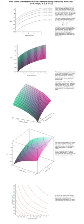When preferences are represented by a utility function, the indifference curves are the level curves of the utility function. Therefore, if one is to change the quantity of x by dx without moving off the indifference curve, one must also change the quantity of y by an amount dy.